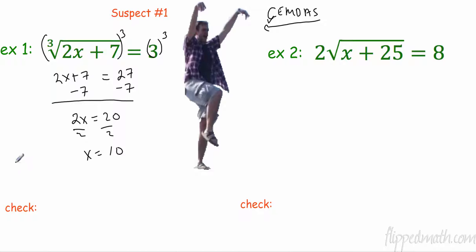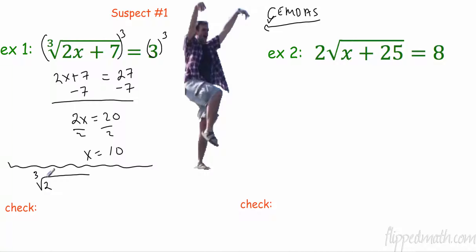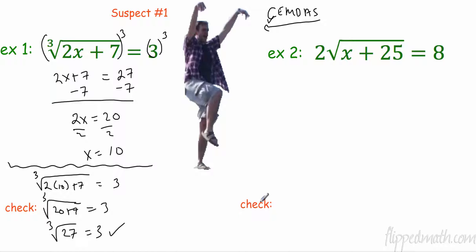Now I know Mr. Kelly, when he taught this in algebra, told you guys to check it. It's really important to check all these answers — we'll find out why today, because someone has shady answers. Let's see if it's Mr. Kelly. Checking: the third root of 2 times 10 plus 7. Does that equal 3? The third root of 27 is 3. So it does check out. So far, so good. Mr. Kelly is in the clear right now.